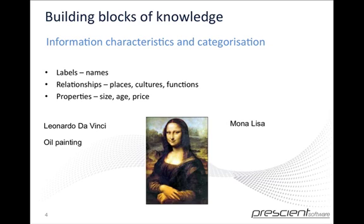We also know that it's an oil painting — that's a property. It's 500 years old — that's a property as well. It's Italian — that's more of a relationship. It's hung in the Louvre — that's another relationship. And we also know that if we were to try and buy it, it would be a little bit pricey, and that is also a property. Here you can see how the facts or information surrounding an item can be labelled down into labels, relationships and properties.